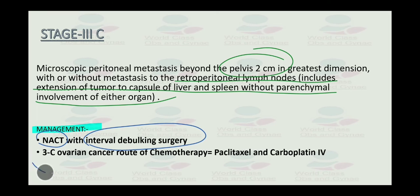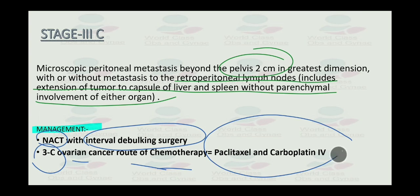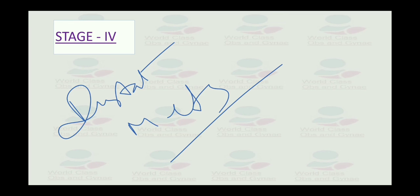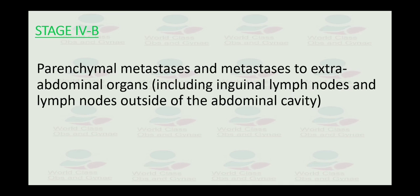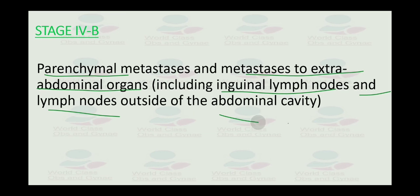The route of chemotherapy for ovarian cancer is paclitaxel and carboplatin IV. The most common side effect of chemotherapy is alopecia. In stage 4, we have distant metastasis beyond the peritoneal cavity, including hepatic, splenic, and extra-abdominal metastasis, managed by neoadjuvant chemotherapy with interval debulking surgery. Stage 4a includes pleural effusion with positive cytology. Stage 4b includes parenchymal metastasis and metastasis to extra-abdominal organs including inguinal lymph nodes.